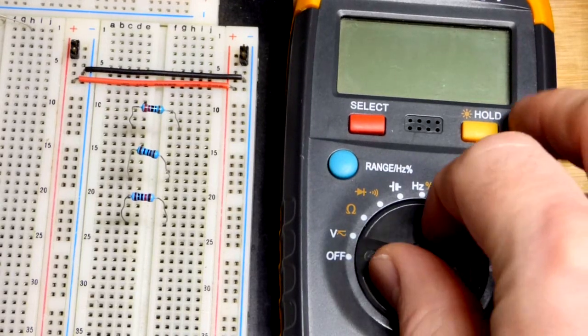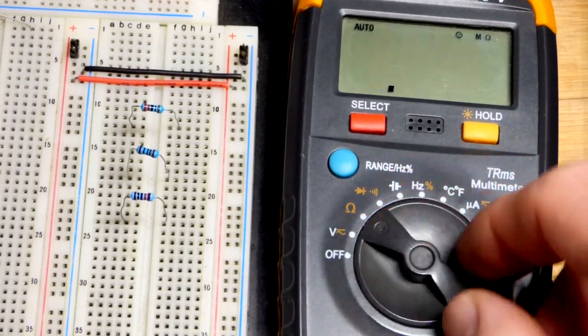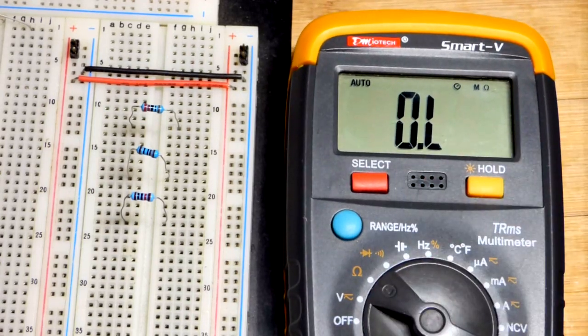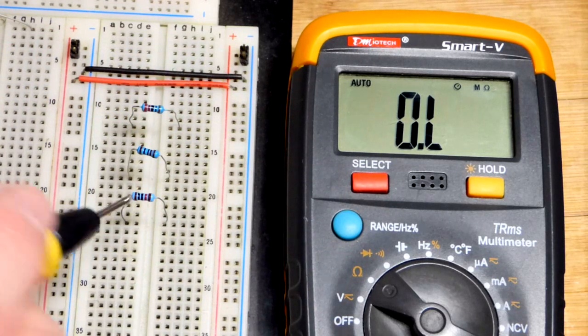An auto-ranging meter is much simpler. We just have to go to the omega symbol, ohms there for resistance. Again, overload because it's measuring the air between the two probes.